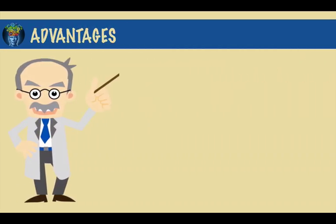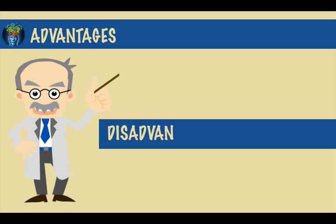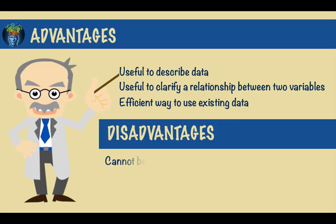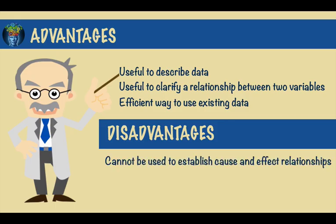Like all types of experiments, there are advantages and disadvantages to using the correlational method. On the one hand, doing so can be very useful to describe data and clarify relationships between two variables. It is also an efficient way to use existing data.